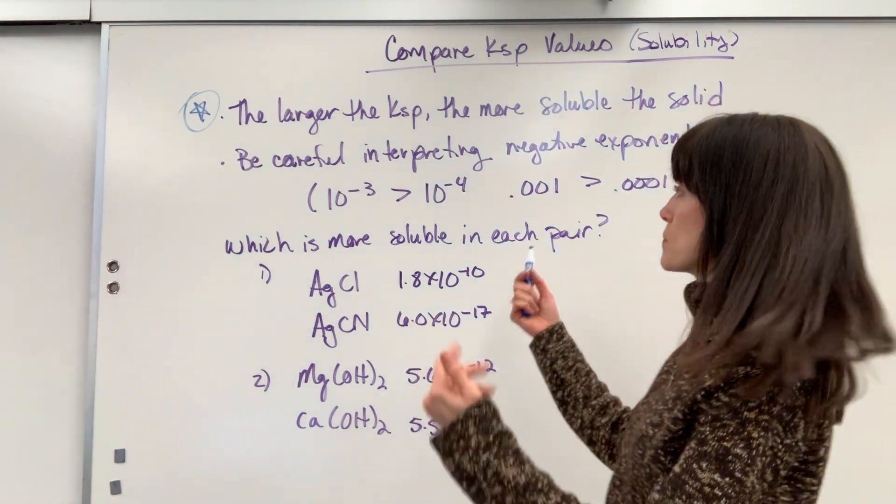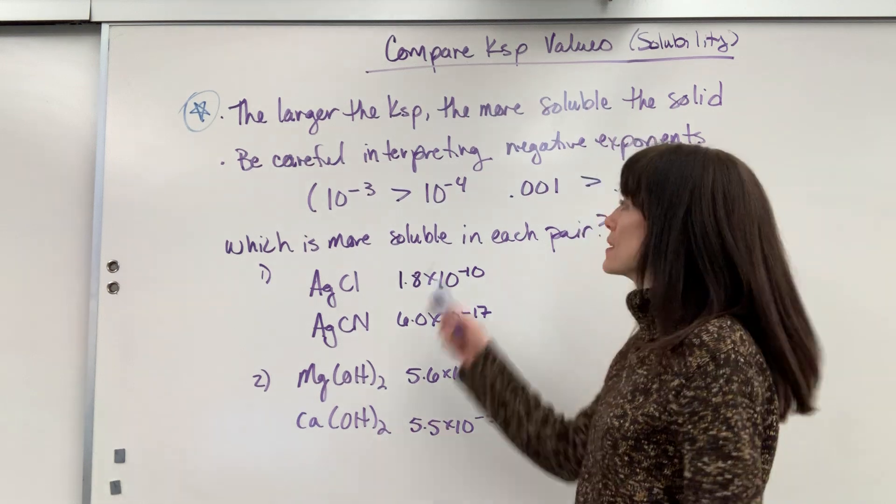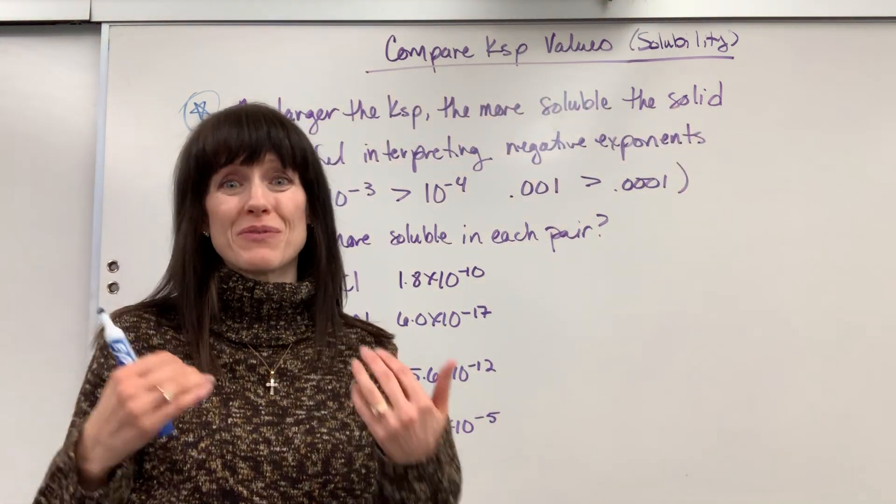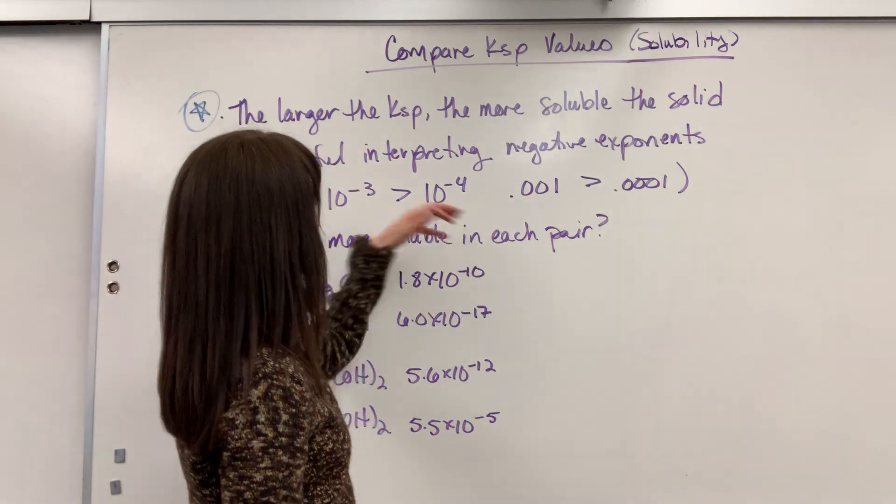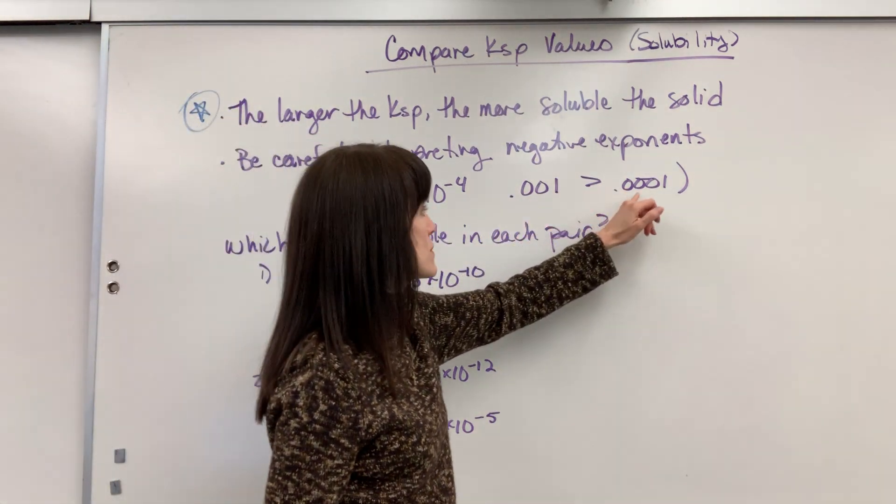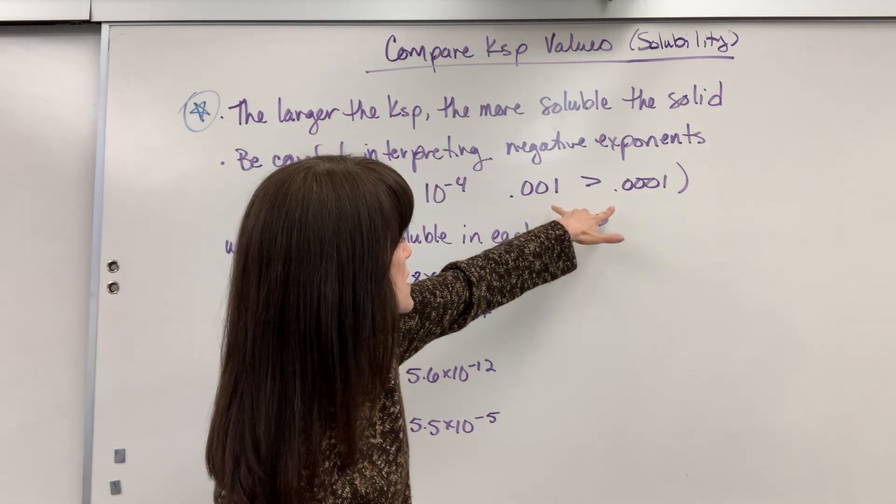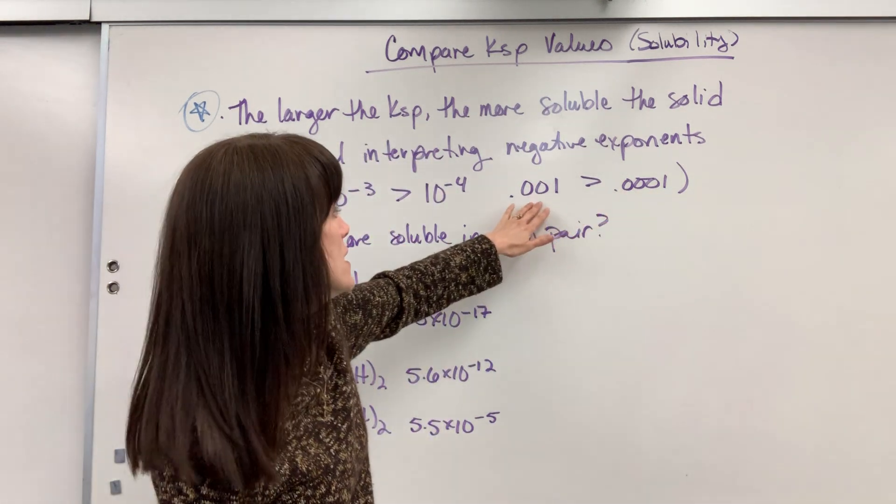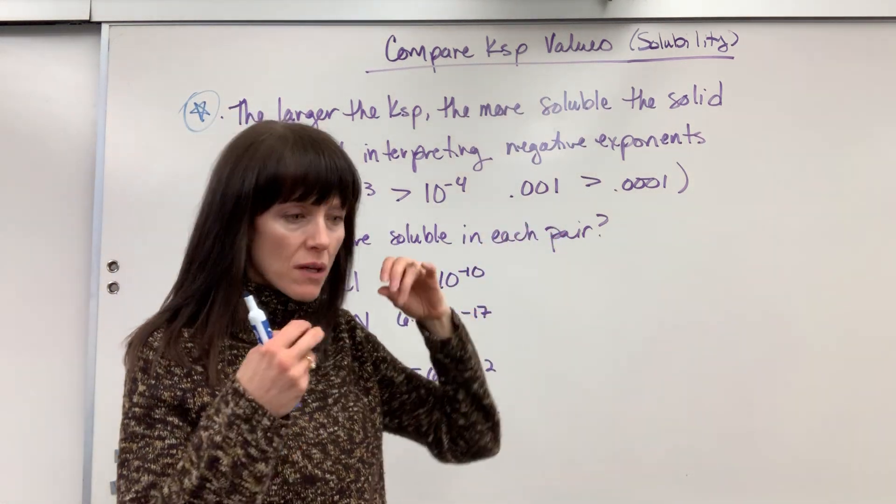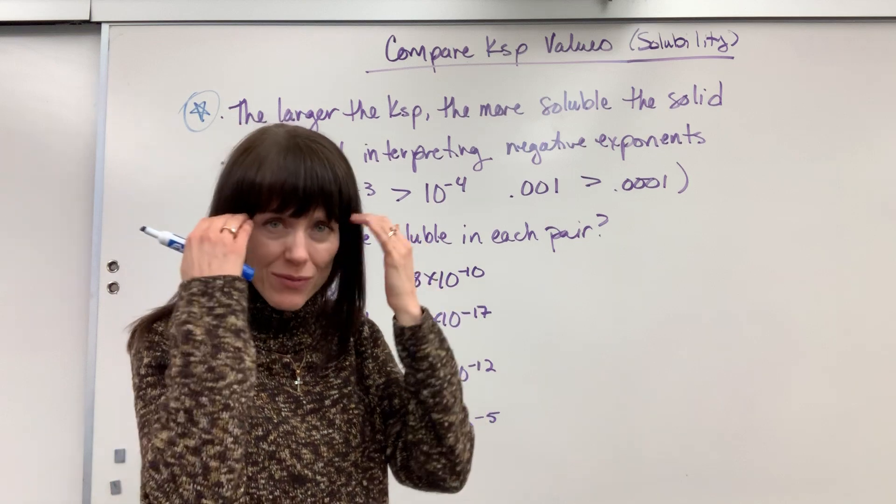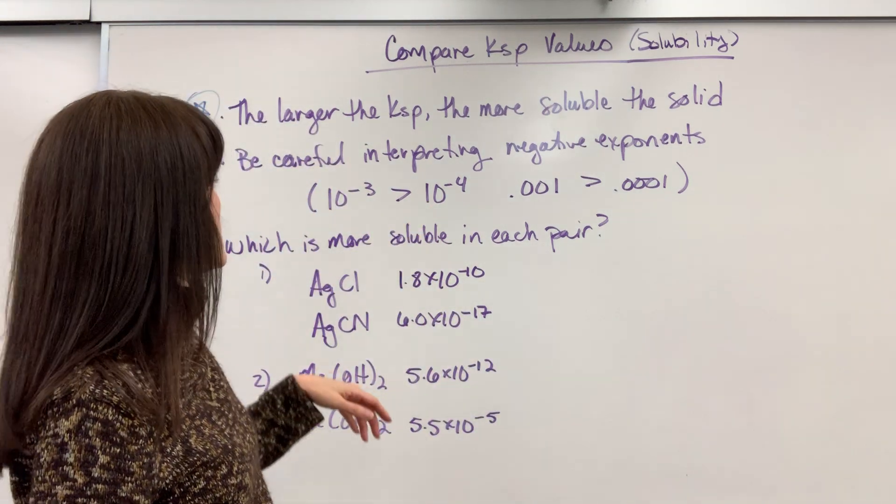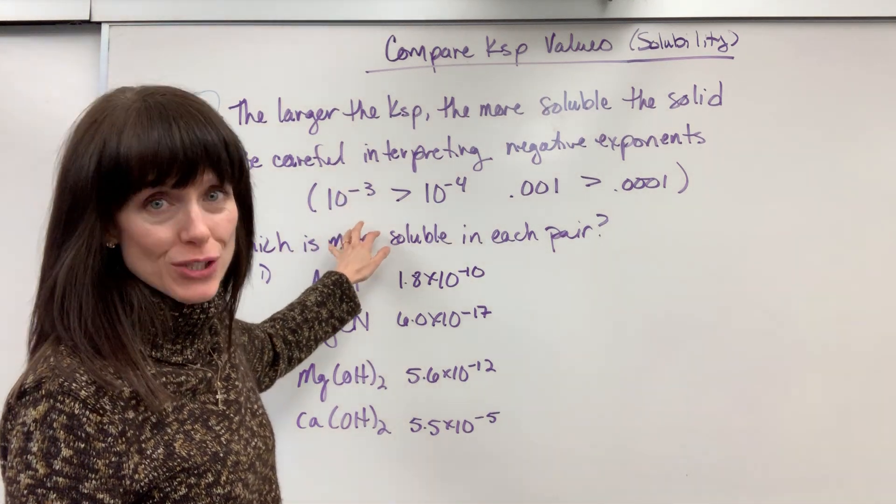Don't look at it just really fast and go, oh, 4 is bigger than 3. No, these are negative. So we're moving the decimals. I actually wrote this out in decimal form to make it super visual for you. So 10 to the minus 3 is 0.001. 10 to the minus 4 is 0.0001. Now looking with the decimals, it's easy to see, oh yeah, 10 to the minus 3 is bigger. So 10 to the minus 3, that is larger.